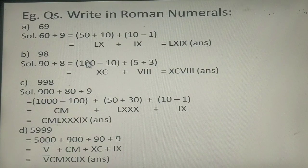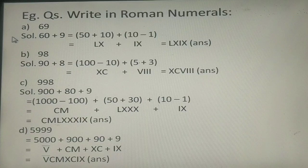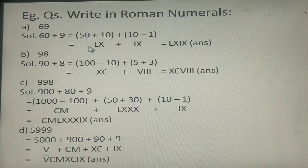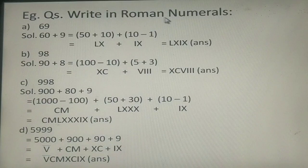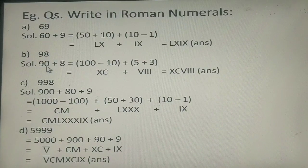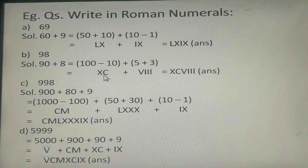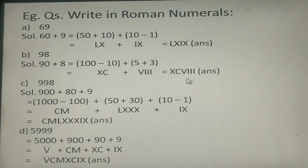Here are some example questions. Write in Roman numerals the following numbers. First, 69: this equals 60 plus 9, which is 50 plus 10 plus (10 minus 1). So 50 is L, 10 is X, and 9 is written as IX, giving you LXIX. Next, 98 equals 90 plus 8, which is (100 minus 10) plus 5 plus 3. So X is written before C to represent 90, and 8 is VIII, giving you XCVIII.